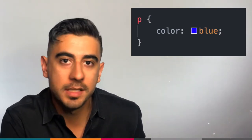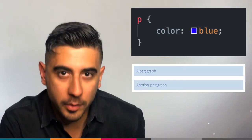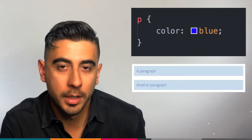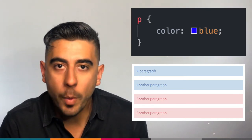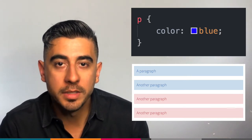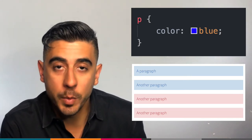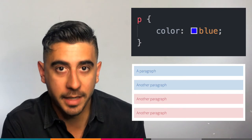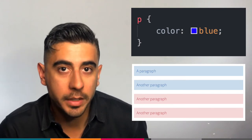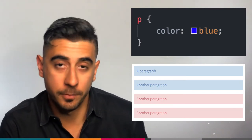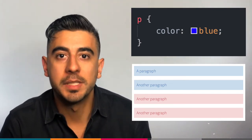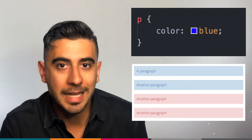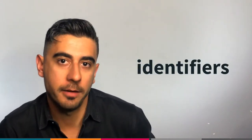But what if the type of element wasn't specific enough to target all the elements you want? What if you just want some paragraphs to be blue and some of them to be red? Then we need a way to distinguish between these two kinds of p tags. A p selector is not specific enough — that's where unique identifiers come in handy.